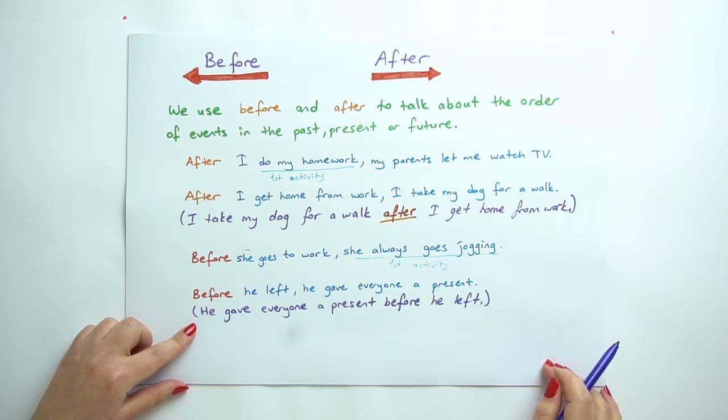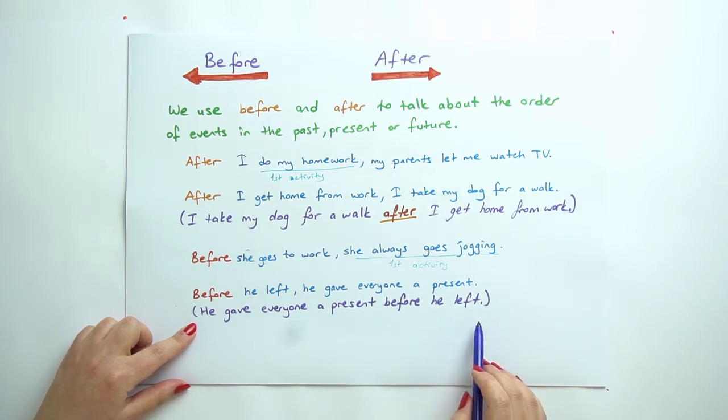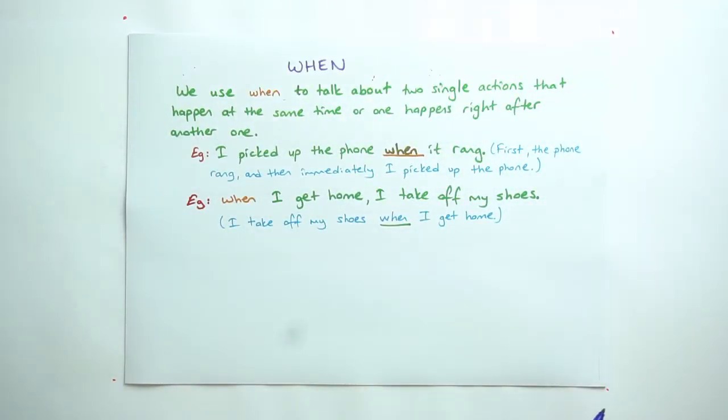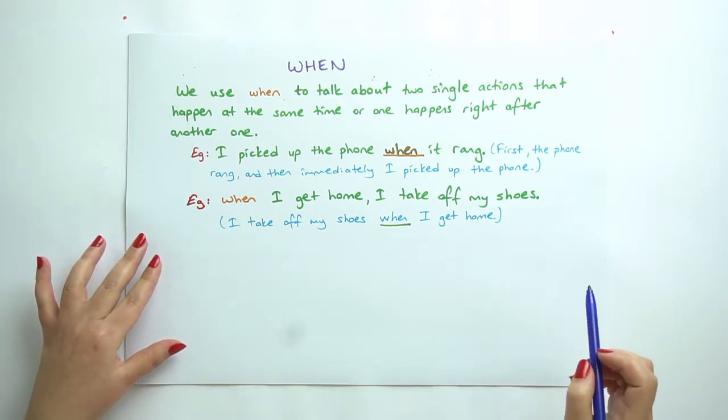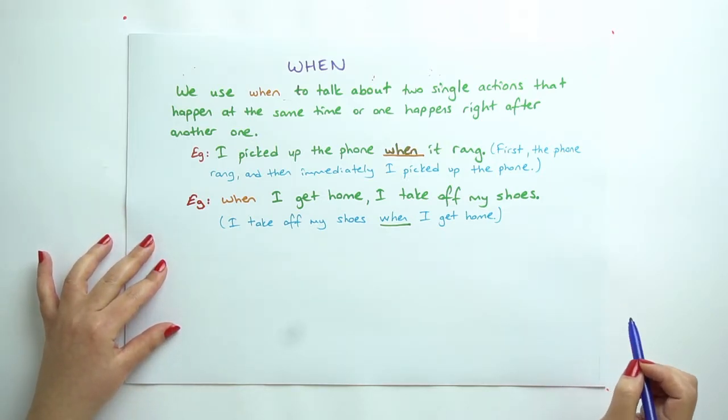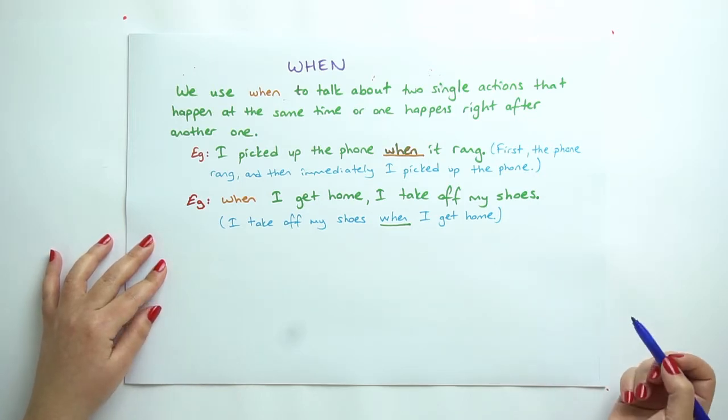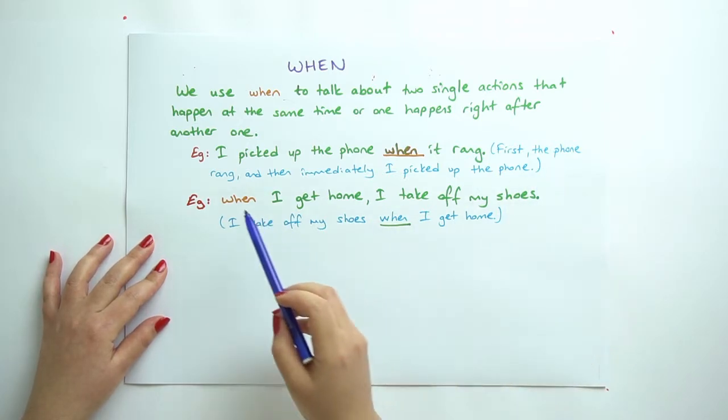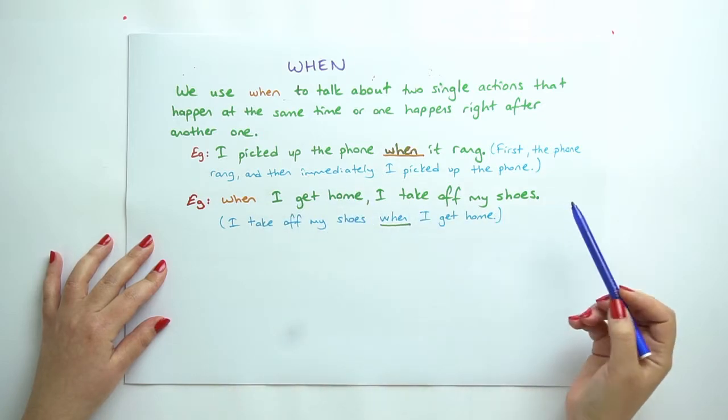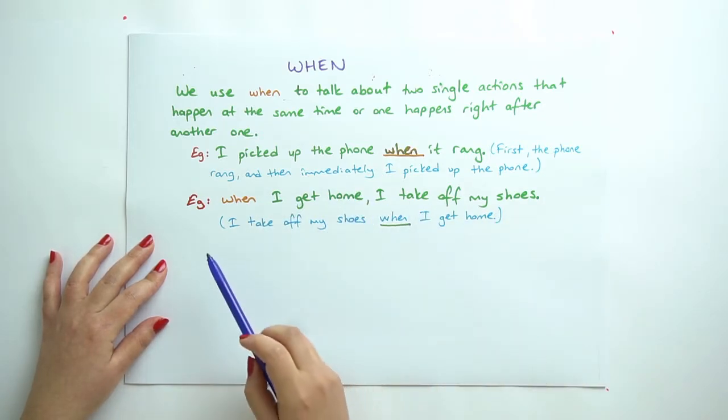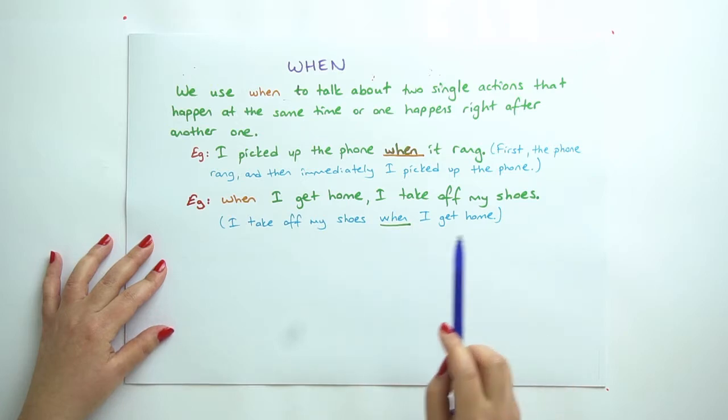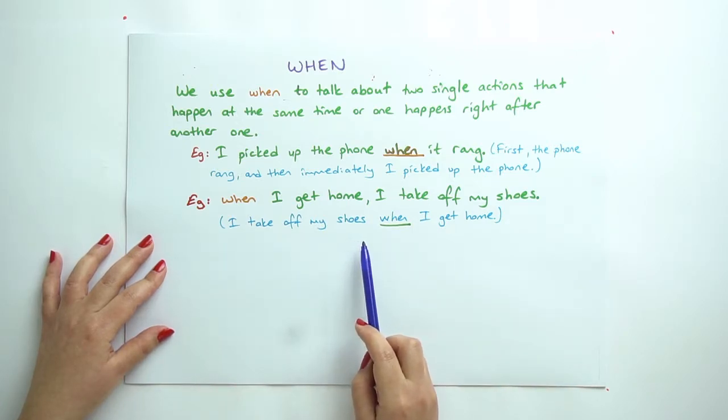Before he left, he gave everyone a present, or he gave everyone a present before he left. And when: we use when to talk about two single actions that happen at the same time or one happens right after another one. For example, I picked up the phone when it rang. First the phone rang and then immediately I picked up the phone. Another example: when I get home I take off my shoes, or I take off my shoes when I get home.